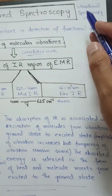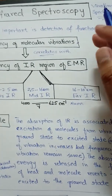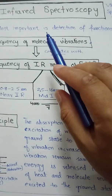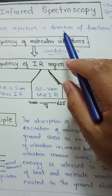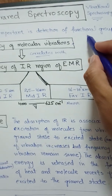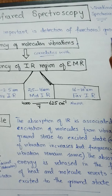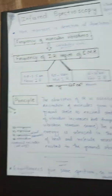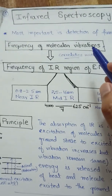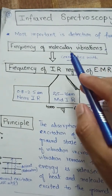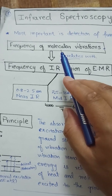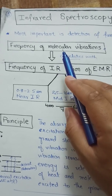IR spectroscopy is also known as vibrational spectroscopy because it is concerned with the vibration of molecules. The importance of this spectroscopy is the detection of different functional groups — we can detect different functional groups in a compound, or detect compounds on the basis of their functional groups.